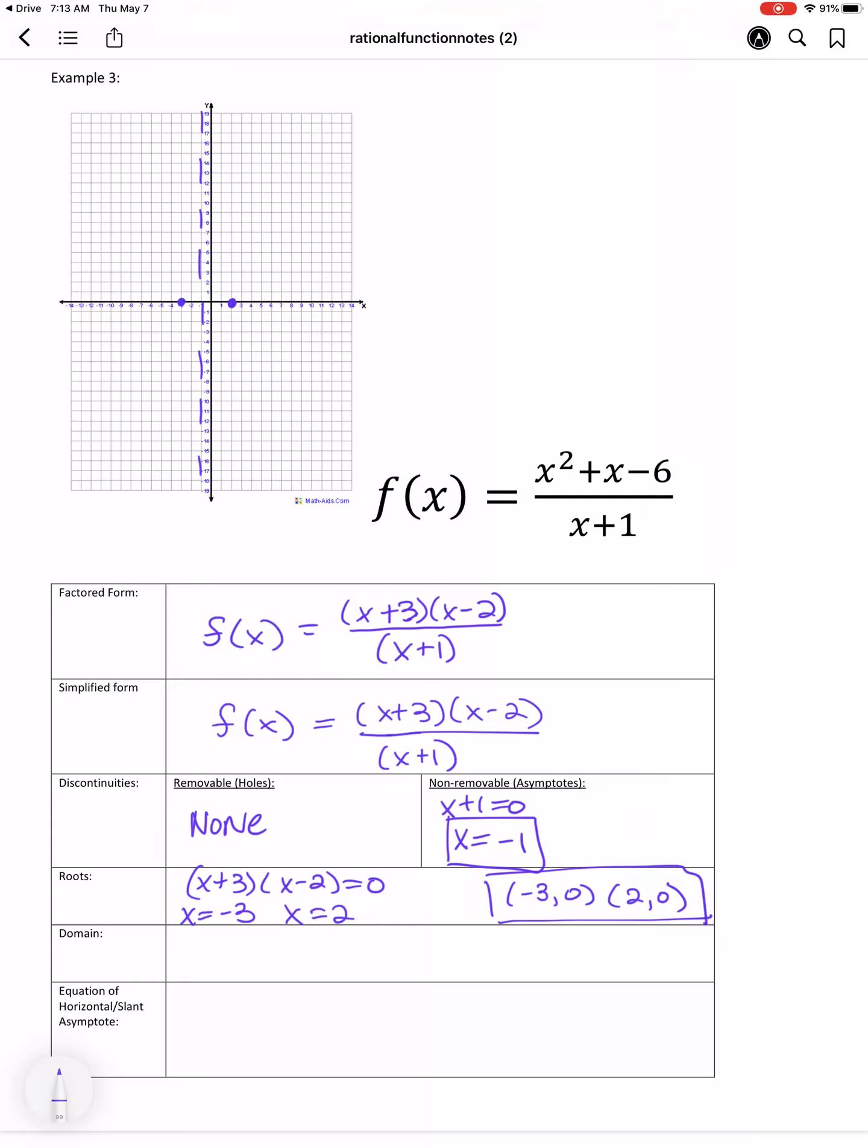For the domain, we're just going to put in the one break of this non-removable asymptote. So negative infinity to negative 1, union negative 1 to infinity, or x cannot equal negative 1. Either one will work.